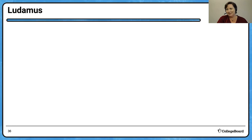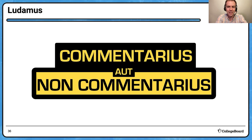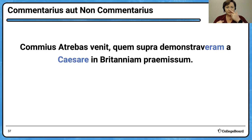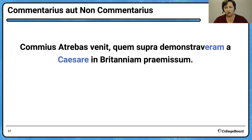Ludamus! It's game time again — Game Number Two. We're going to play a game I like to call 'Commentarius aut non-commentarius.' I'm going to give you selections of Latin and you need to tell me if they represent Caesar's commentaries or something like Virgil's Aeneid — the epic poem tradition. The first example: I see 'a Caesare,' and here Caesar writes about himself in third person in the commentarius — 'Commius, Trebonius' — sent by 'me' — but Caesar the general into Britain. Commentarius, definitely.